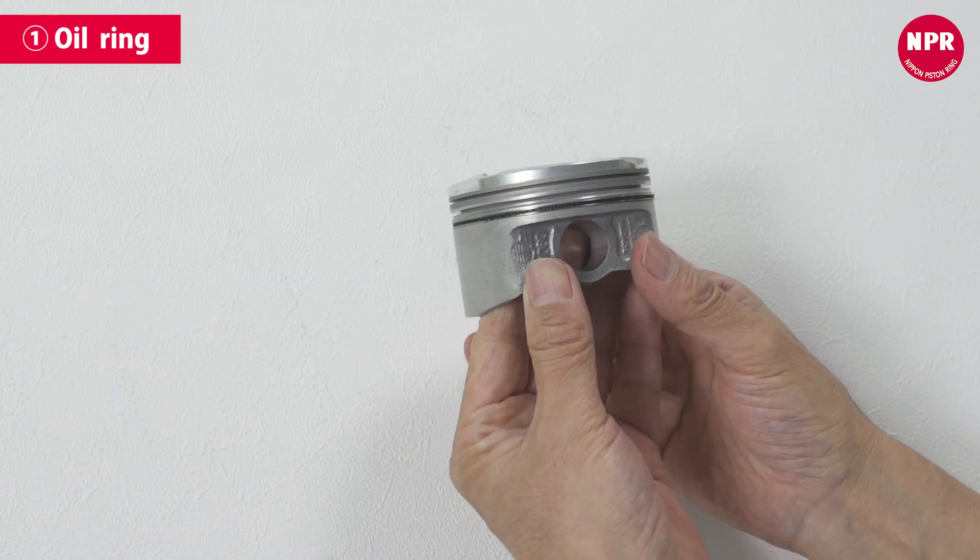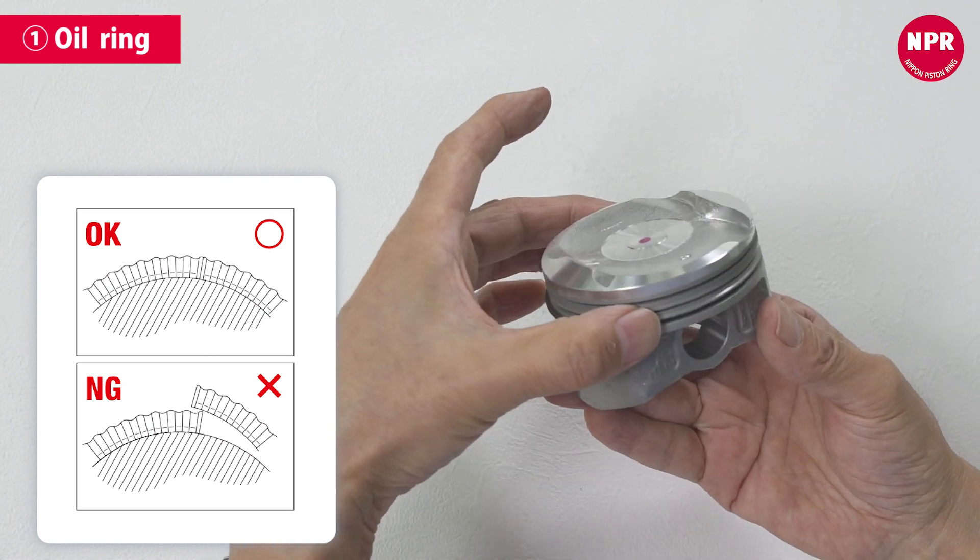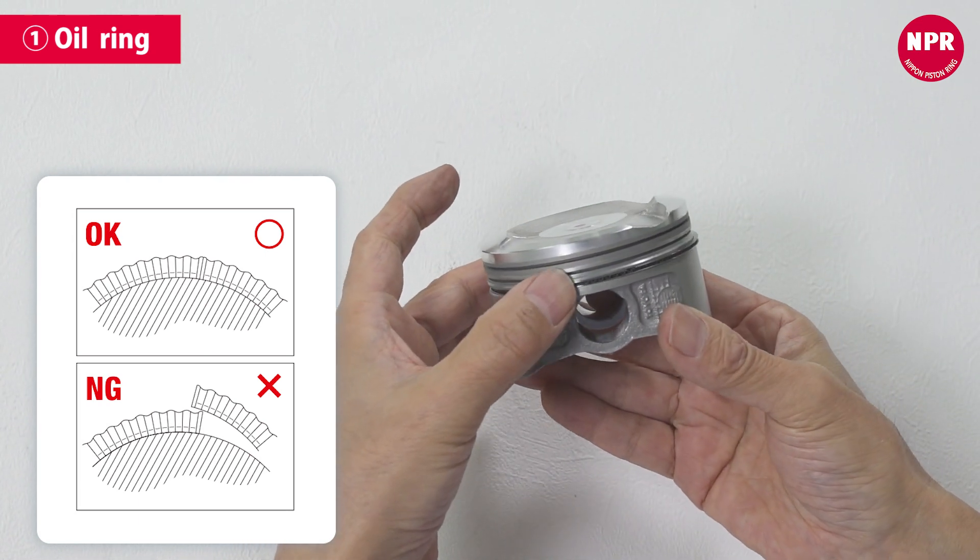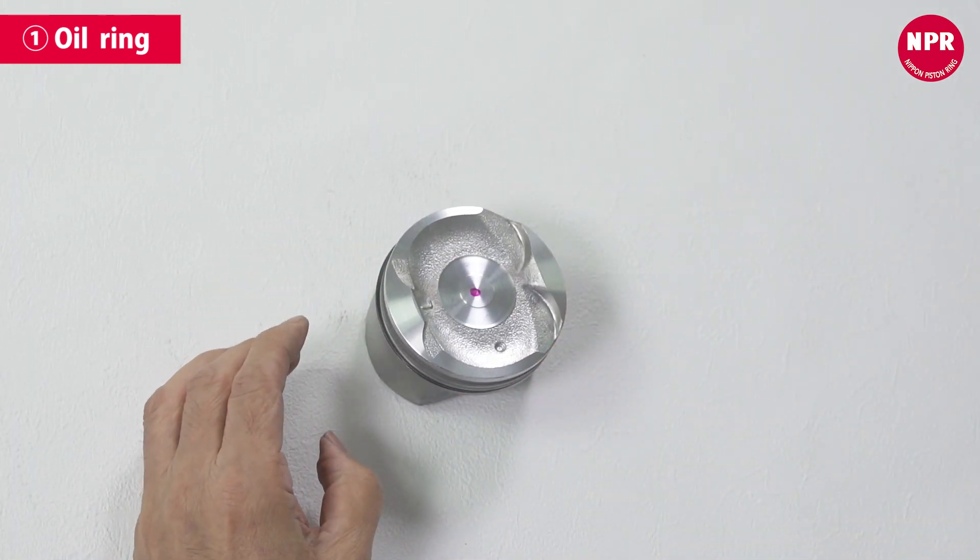Once these components have been attached, confirm that the end gaps are not overlapping with those of the space expander. The oil ring installation process is now complete.